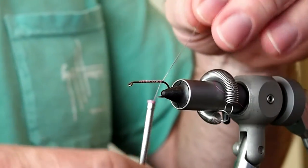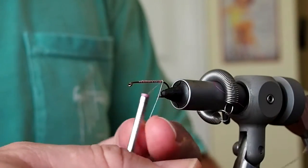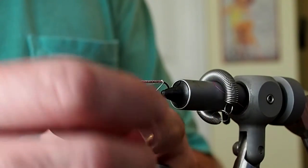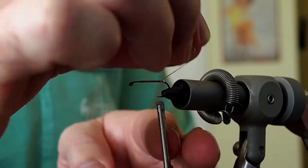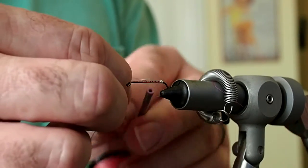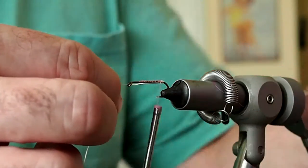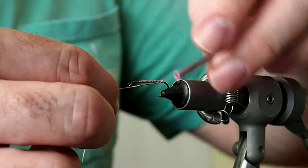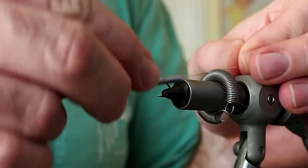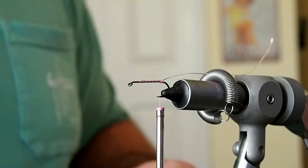This is going to be used for ribbing but I also like to just take a couple of turns with it behind where we're going to be tying the body just to create a little butt. And then just tie that off and angle it back and tie a couple of wraps there.